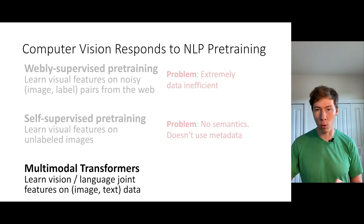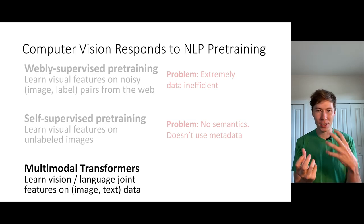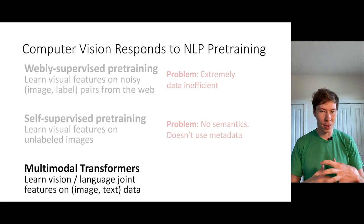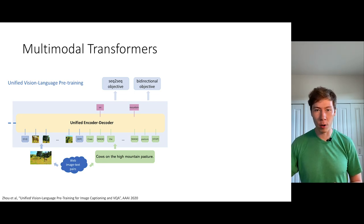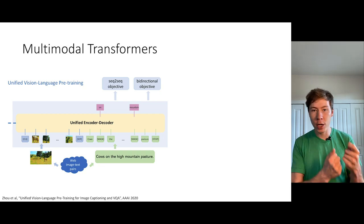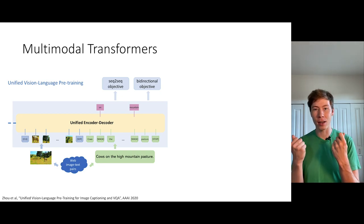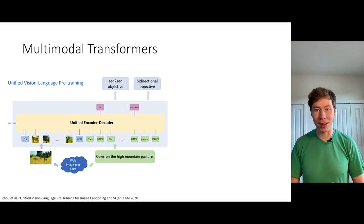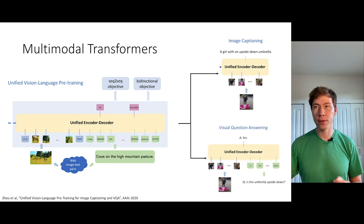The third mechanism I want to talk about is multimodal transformers. Here we download a bunch of images and text and learn some kind of multimodal model that embeds images and text into a joint feature space, which can then be transferred to downstream vision-plus-language applications. As a general flavor of how they work: they first extract regions from images and tokens from text, pass this set of image regions and text tokens into one big unified transformer that performs some kind of masked language modeling objective inspired by BERT, and then transfer it to downstream tasks like image captioning or visual question answering.